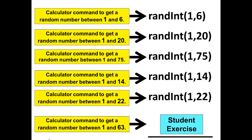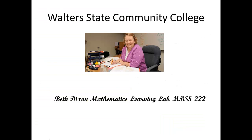The calculator command to get a random number between 1 and 63? I'll just tell you — it'll be RANDINT(1,63). I'm going to end the first video here as we're approaching the 10-minute mark. Thank you for listening and watching — I hope this was helpful for learning to use the calculator to generate random numbers. Please watch the second video where we'll do some actual sampling from a finite population.